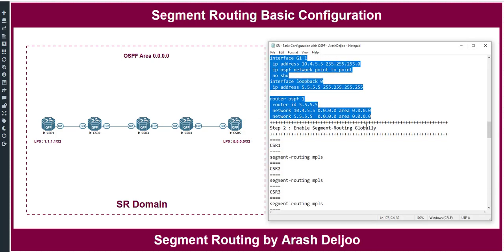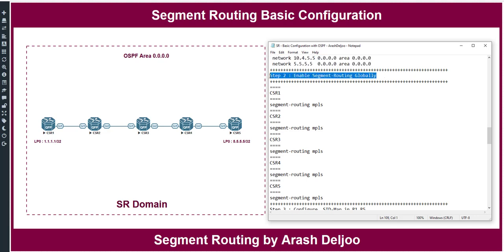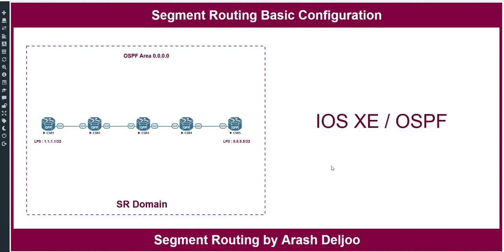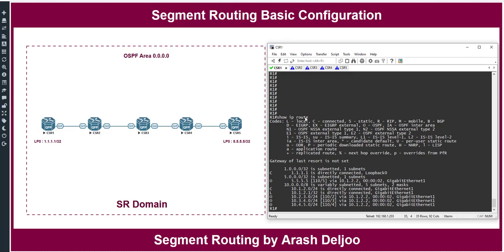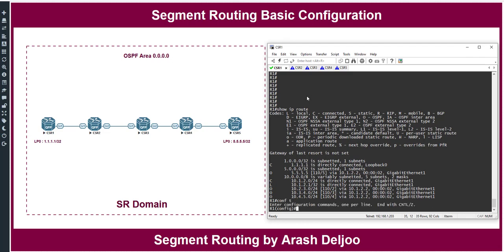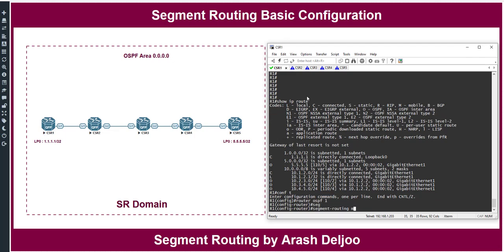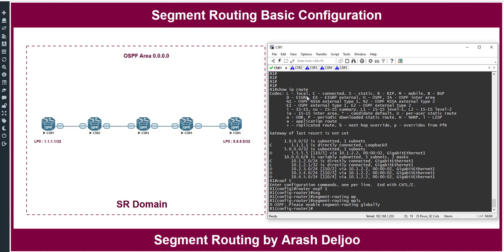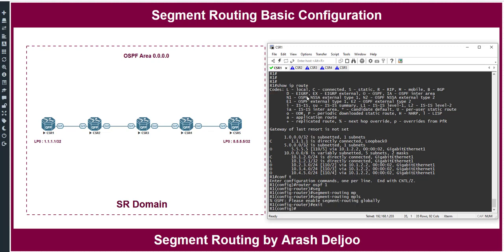Now we can start the segment routing configuration. Step 2: enable segment routing globally — this is mandatory in IOS XE. In IOS XR you can configure segment routing directly under OSPF, but in IOS XE you must first run 'segment-routing mpls' globally. If you try to configure it under OSPF first, you will receive the error: 'Please enable segment routing globally'.